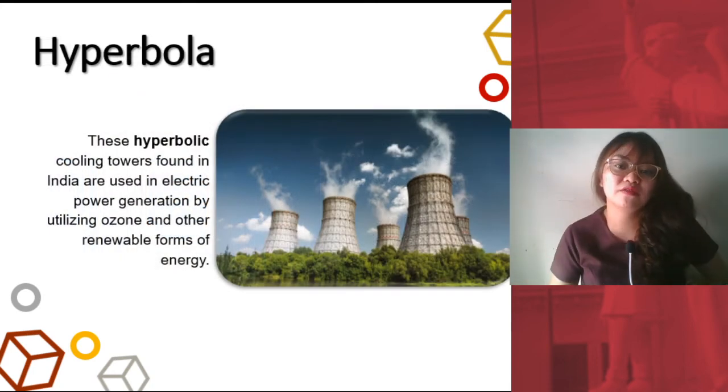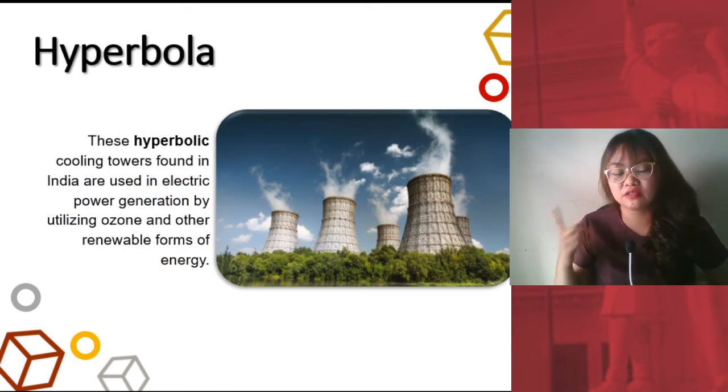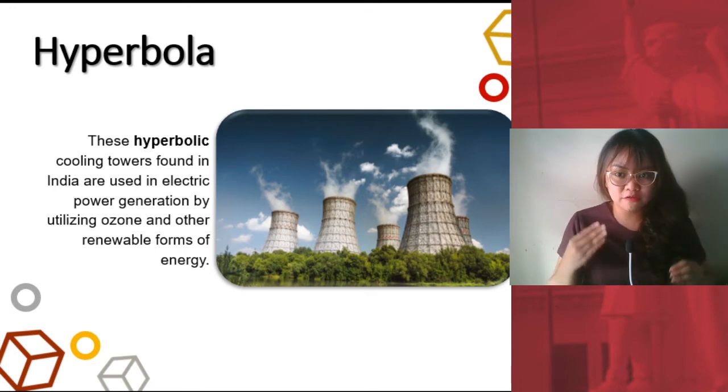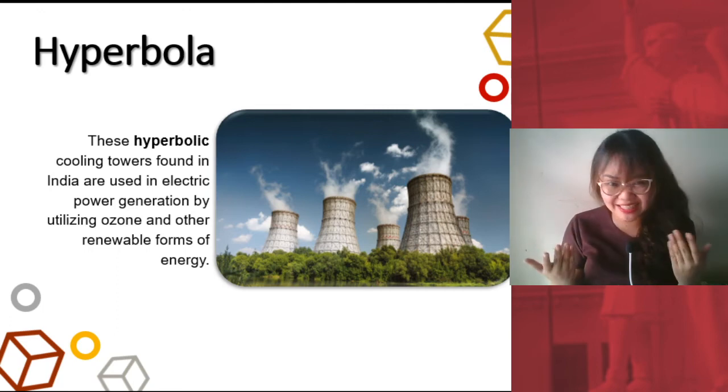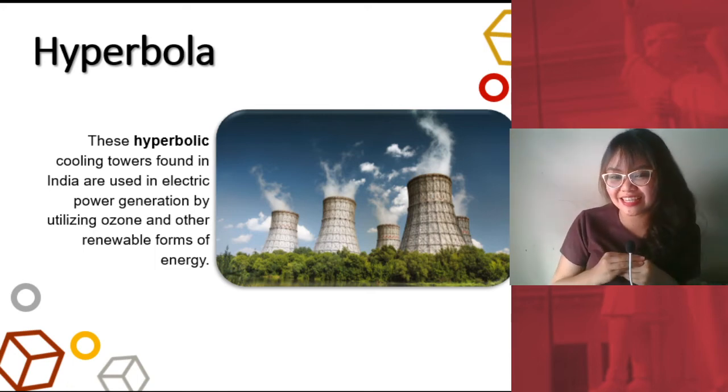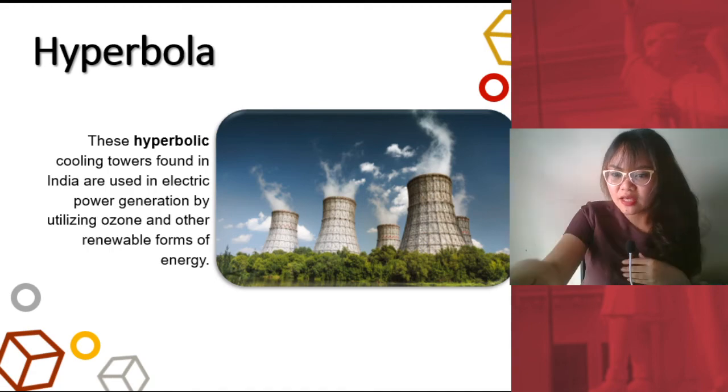Lastly, hyperbola. So, these are hyperbolic cooling towers. These are found in India and are used in creating natural renewable resources. If you would also notice, a lot of cooling towers actually follow hyperbolic shapes. Why is that? Keep on learning to be able to know the special characteristics of these conic sections.